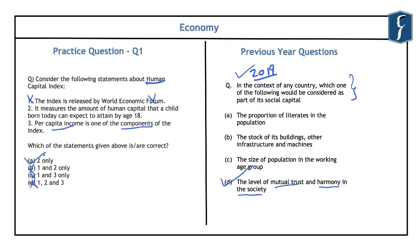The human capital index measures the amount of human capital a child born today can expect to attain by the age of 18-19, conveying the productivity of the next generation compared to a benchmark of complete education and full health. It is constructed for 157 countries and made up of five indicators: probability of survival to age five, expected years of schooling, harmonized test scores, adult survival rate (fraction of 15-year-olds surviving to 60), and the proportion of children who are not stunted.